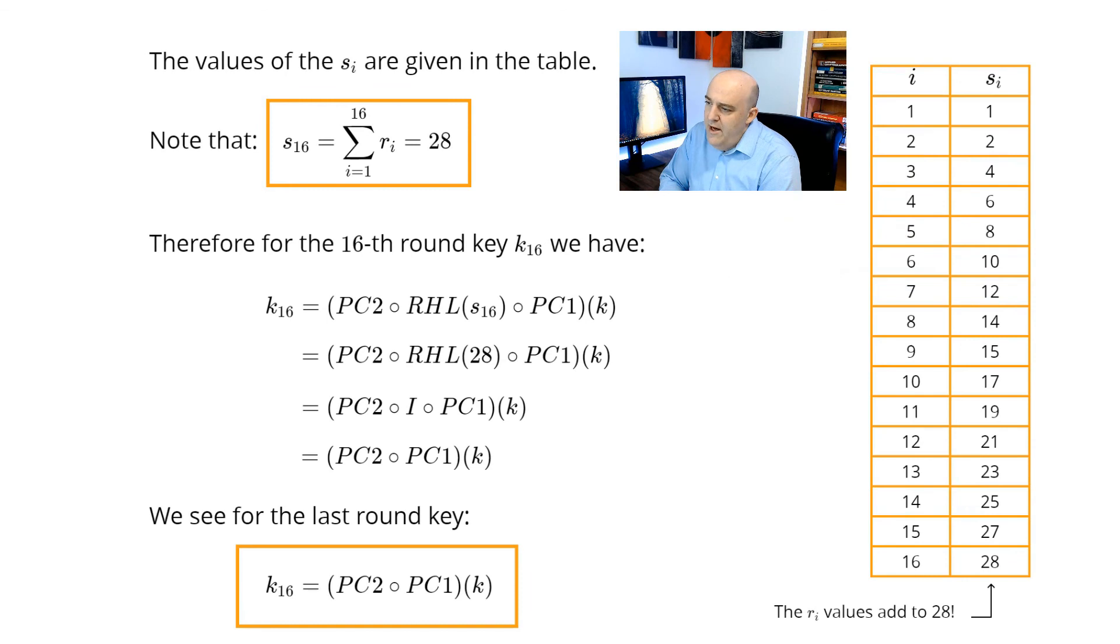Now let's just add up the values of these s_i and write them in a table. And one thing we notice is that when we add up all these s_i's, the last value there is 28. So s_16 is 28. And so that means that K16 is PC2 composed with RHL of 28 composed with PC1 of the original key value K. And since RHL of 28 is I (the identity), we can make that substitution and composing with the identity doesn't do anything. So we see that the last key there, K16, is really just PC2 composed with PC1 of K.